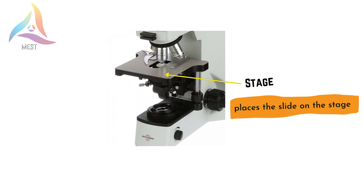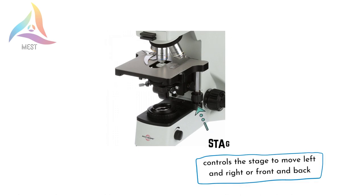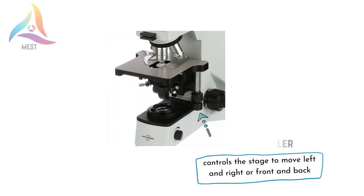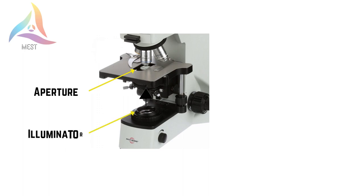The stage is the flat platform where we place our slides. Stage clips hold the slides on the stage. The stage controller controls the stage to move left and right, or front and back. In the center of the stage there is a hole called an aperture, through which light passes to illuminate the specimen.